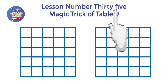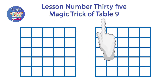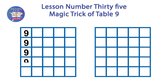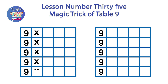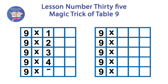Lesson number 35: magic trick of table 9. Let's begin. Write the digit 9 eleven times down the left side, add a multiply sign, then write 1 through 10, and then an equal sign.